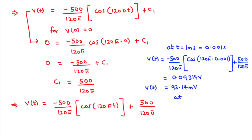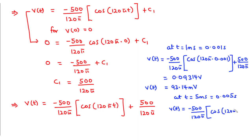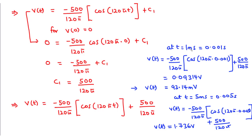Similarly, at t equals five milliseconds, that is 0.005 seconds, we have v of t equal to negative 500 over 120 pi times cosine of 120 pi times 0.005, plus 500 over 120 pi. Evaluating this gives v of t equal to 1.736 volts. So 93.14 millivolts is the instantaneous voltage at t equals one millisecond, and 1.736 volts is the instantaneous voltage at t equals five milliseconds.